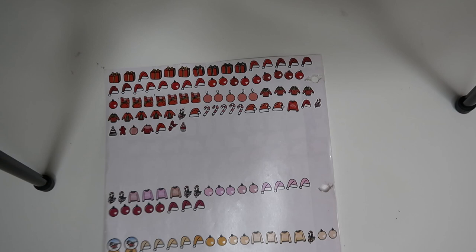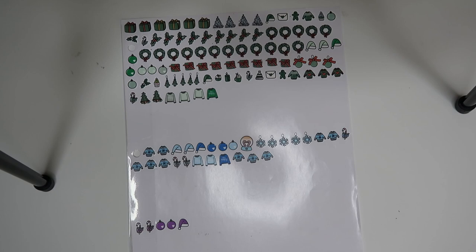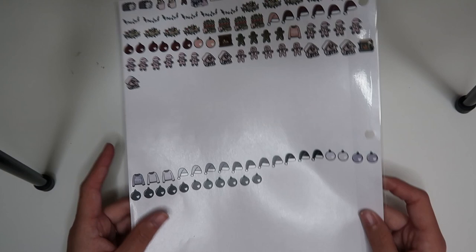Then we move right on into my Christmas section. We have characters on page one. Then I have red, pink, orange, and yellow. Red and green are obviously the biggest in my Christmas category. We've got green, blue, and purple on this sheet. And then we've got a bit of browns because of gingerbreads and stuff, and then black and white.